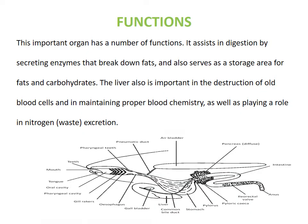Now we will talk about the physiology of the fish liver. This important organ has a number of functions. It assists in digestion by secreting enzymes that break down fats, and also serves as a storage area for fats and carbohydrates. The liver is also important in the destruction of old blood cells and in maintaining proper blood chemistry. The fish liver helps in detoxification by removing toxic substances and destroying old blood cells, which is why it is also called a blood purifier.